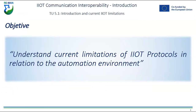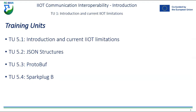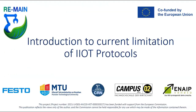The objective is to understand the current limitations of IoT protocols, in particular in relation to the automation environment. This presentation covers an introduction to current IoT limitations, something called JSON and its structures, a brief look at Protobuf and how it's used, and a technology called Sparkplug B.